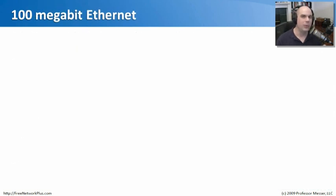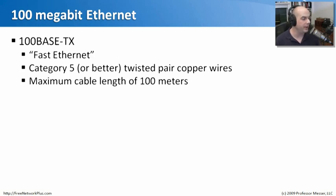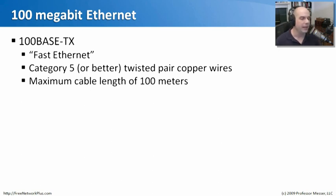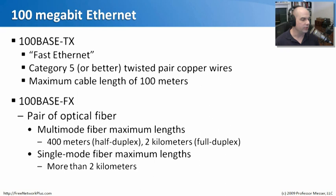10 megabit ethernet was great, but we wanted faster speeds — up to 100 megabits per second — so we created 100Base-TX, what we called Fast Ethernet. Today we still refer to 100 megabit ethernet as fast ethernet. It used Category 5, or now Category 5e, twisted pair unshielded copper cables, with a maximum cable length of 100 meters. There is also a different 100 megabit type that ran over fiber called 100Base-FX.